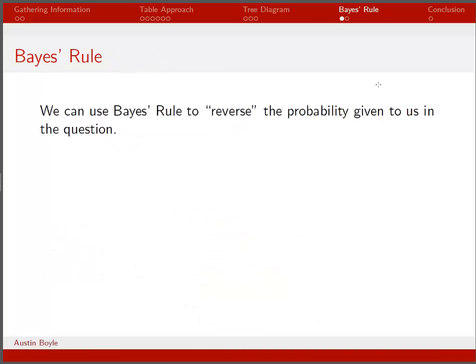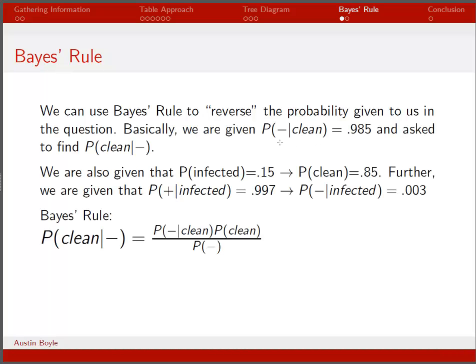Next, let's use Bayes' rule, which can also solve this problem. We're covering Bayes' rule now, and it's nothing new — it can be intimidating for students, but you've already seen it in this HIV problem. We want to reverse the probability given to us: the question gives us the probability of a negative test given you're clean (0.985), and we want to flip that to find the probability of being clean given a negative test. We also know P(infected) = 0.15, so P(clean) = 0.85, and P(negative | infected) = 0.003.